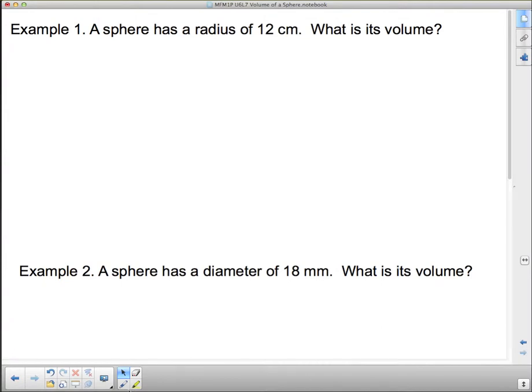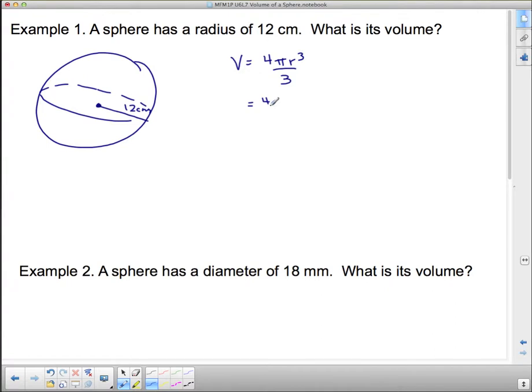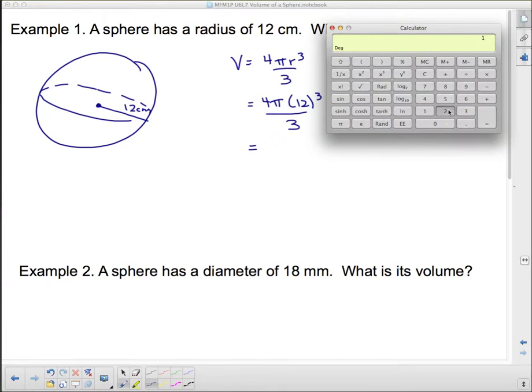So a sphere has a radius of 12 centimeters. Let's draw that sphere. There's our sphere. We're going to put this in the middle so that we can imagine that it's three-dimensional, and the radius is 12 centimeters. And remember, the radius goes from the center out. What is its volume? Well remember, this is on that formula page I gave you right from the get-go: Volume equals 4πr³ over 3. So it's going to be 4π, radius is 12, cubed, divided by 3.